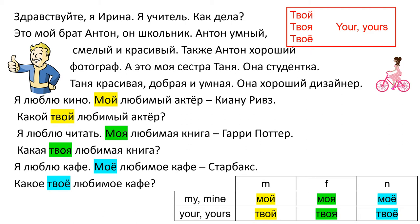Today you'll learn some new words. These words are твой, твоя, твоё — meaning 'your' and 'yours.' It is твой for masculine, твоя for feminine, and твоё for neuter gender. Look at this table. You already know the words мой, моя, моё, meaning 'my' and 'mine.' And it is easy to remember.